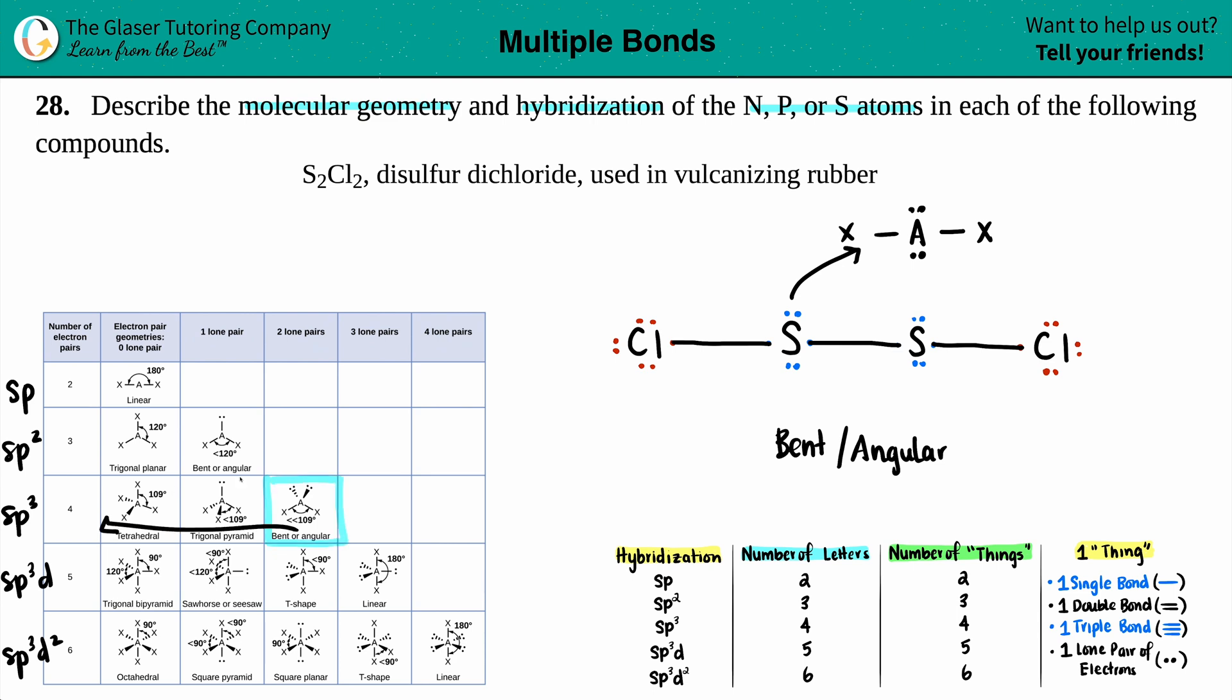Since we already said that we were here, you know that this is automatically sp3, and that is the answer. So each sulfur has a geometry of bent with sp3 hybridization. And any time that you have that bent structure, it's always going to be sp3 hybridized, no exceptions.